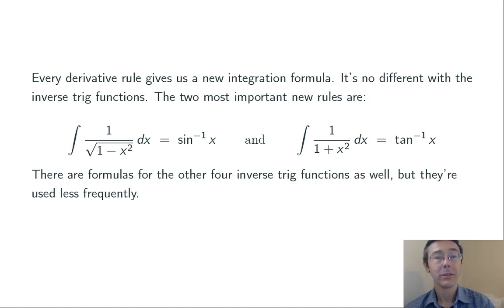There's two particularly important formulas. Here they are. They both come from the derivative rules for arc sine and arc tangent. We've got that the integral of 1 over the square root of 1 minus x squared dx is the inverse sine of x and the integral of 1 over 1 plus x squared dx is the inverse tangent of x.